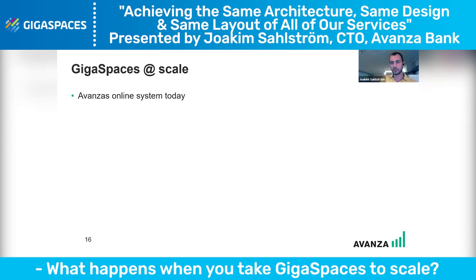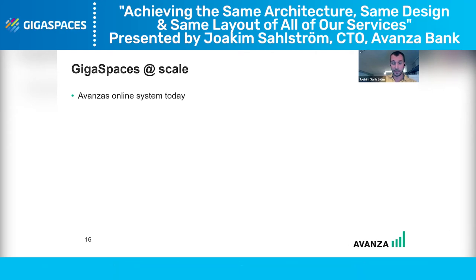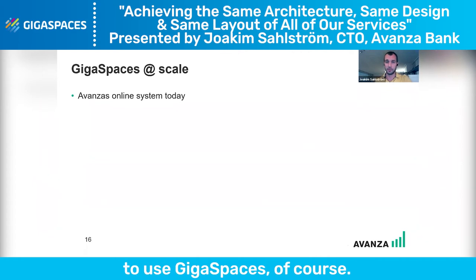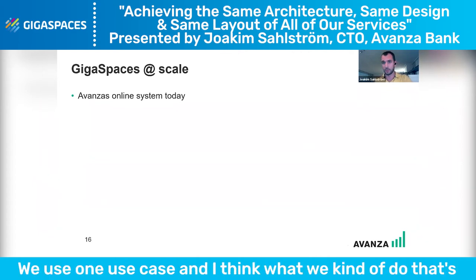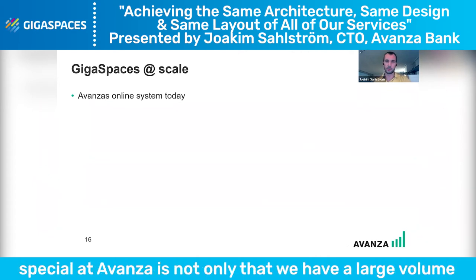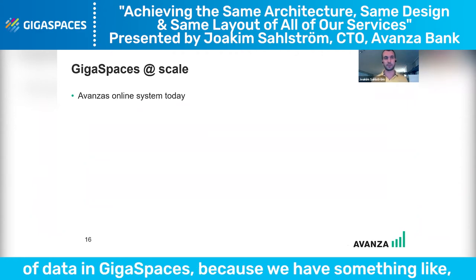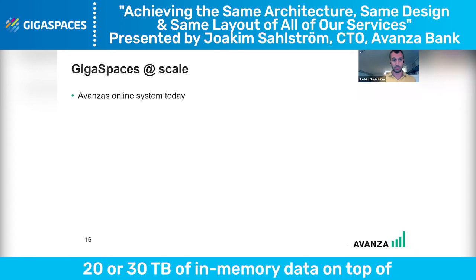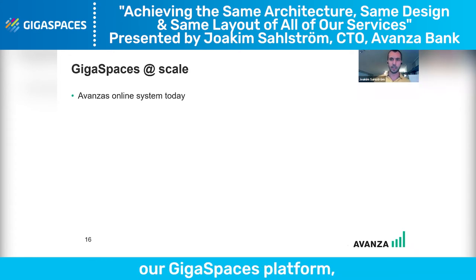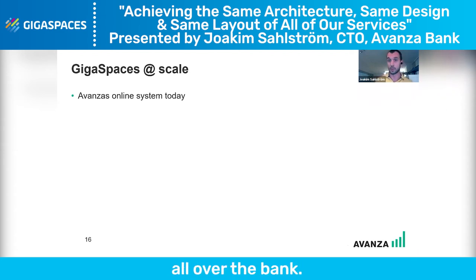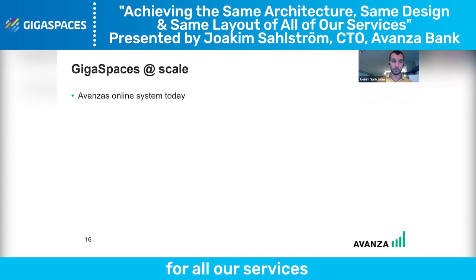What happens when you take GigaSpaces to scale? There are a lot of ways to use GigaSpaces, and what we do special at Avanza is not only that we have a large volume of data in GigaSpaces — we have something like 20 or 30 terabytes of in-memory data on top of our GigaSpaces platform — but we also use it all over the bank. It's our only way to store data for all our services.